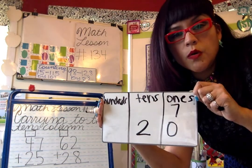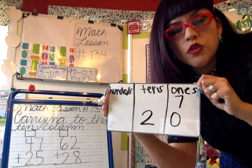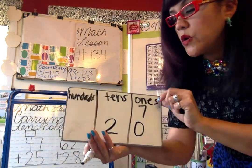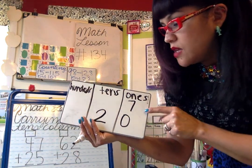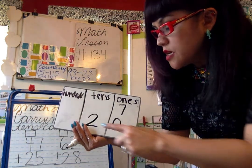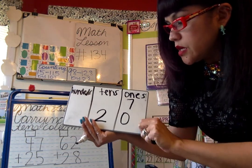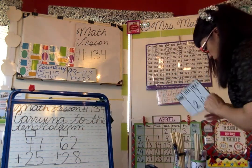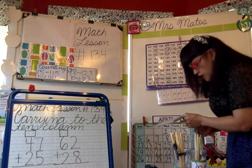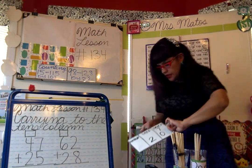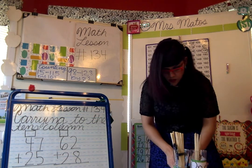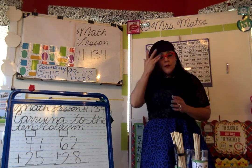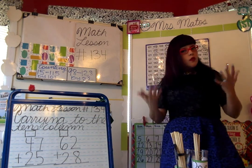Okay class, I'm going to show you the number 20. If I wrote it in the correct place, we have the ones, tens, and hundreds place — so it's the two and a zero here. That means number 20 goes in the tens place. If you knew that, good job! So can you tell me how many chopsticks we have total?